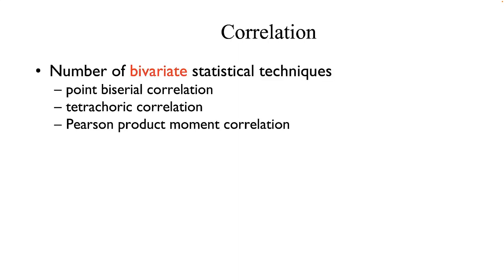The term correlation is a general term referring to a variety of statistics. There are point-biserial correlations, which are the relationship between a nominal variable and an interval or ratio variable; the tetrachoric correlation, which is a relationship between two nominal variables; and of course the Pearson product-moment correlation, which is the relationship between two variables both measured with interval or ratio scales.